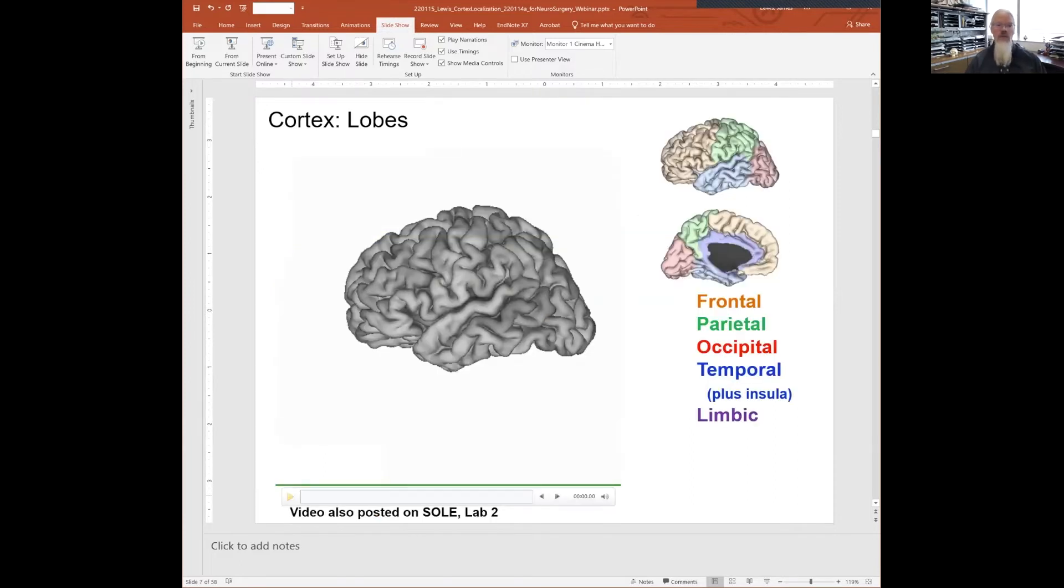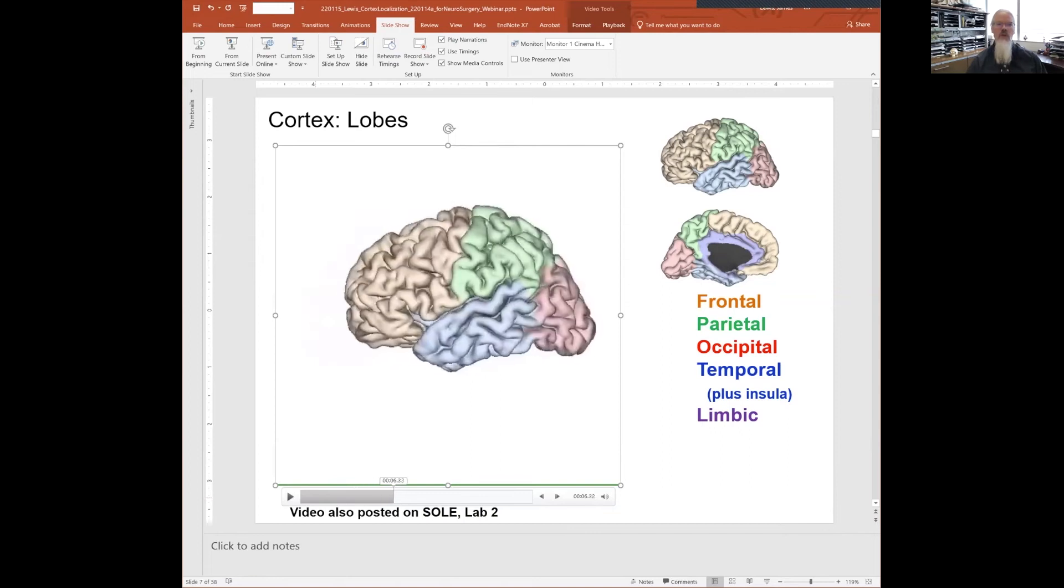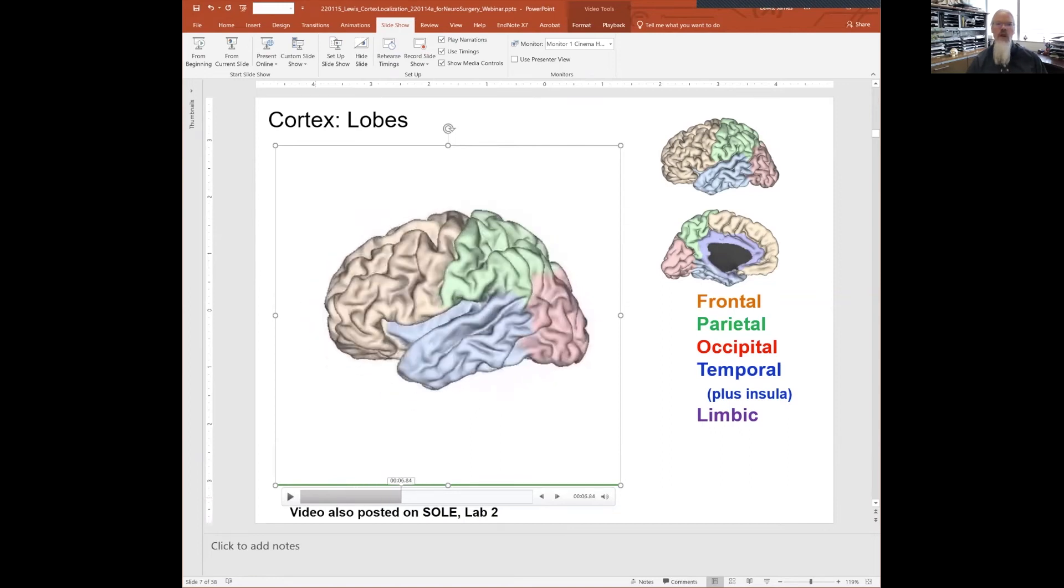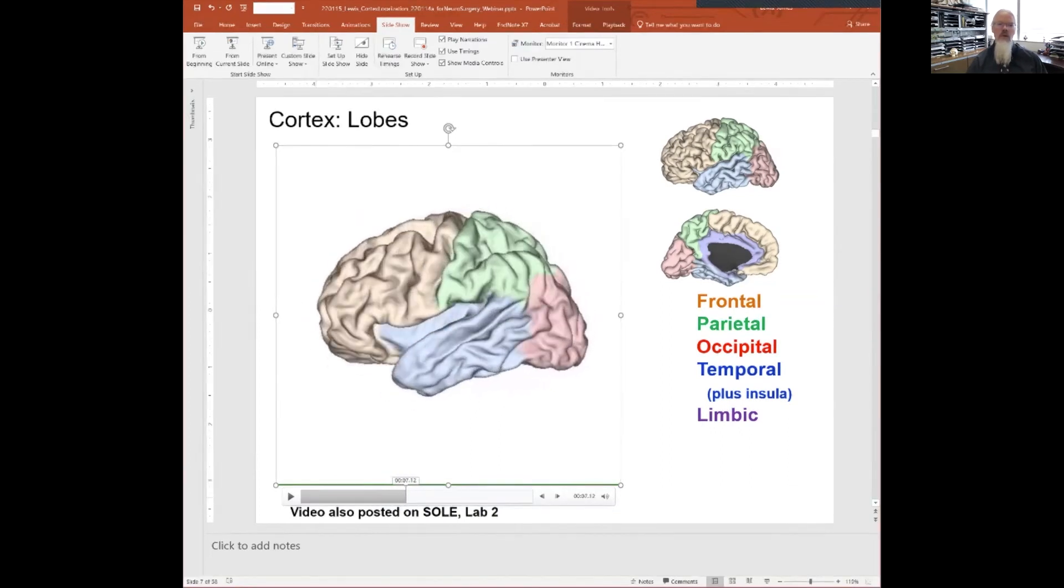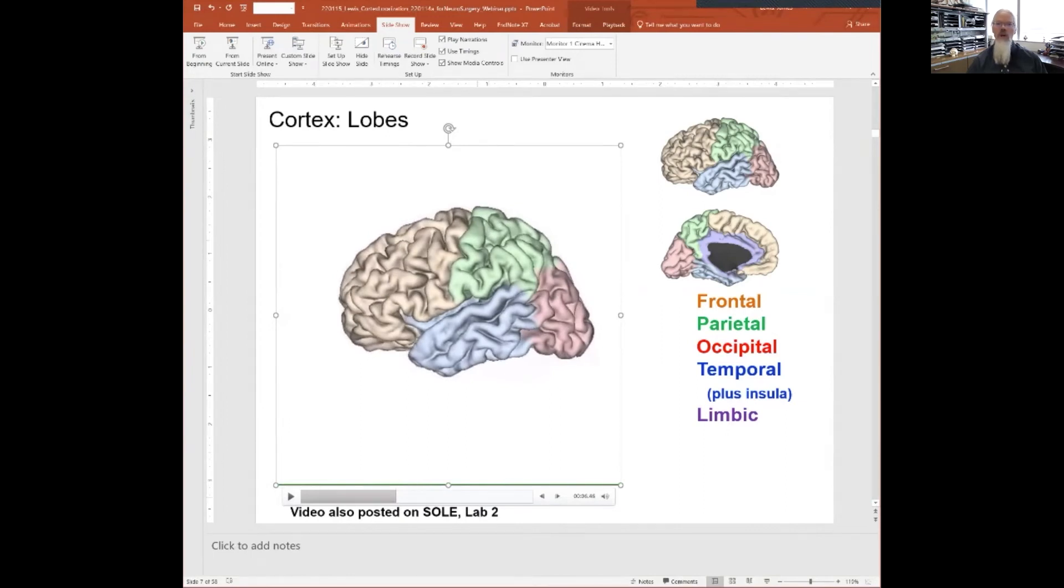Now you can computationally unfold, inflate, and view the cortex. Here's a three-dimensional rendering of a human brain: I've color-coded in tan the frontal cortices, green the parietal, salmon pink the occipital, and the temporal lobe here in blue.